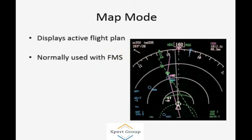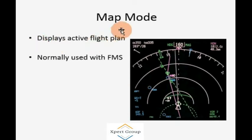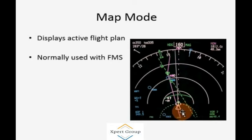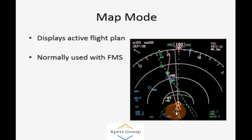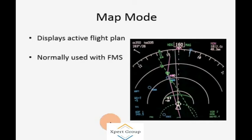Now we are going to discuss all of these modes separately. In map mode, the display shows the active flight plan — you can mark waypoints, a track, or a route. If you are creating a route, a waypoint, or a track, that information is provided on a map. This map provides very handy information for the air crew to reach their destination. Map mode is normally used together with the FMS.